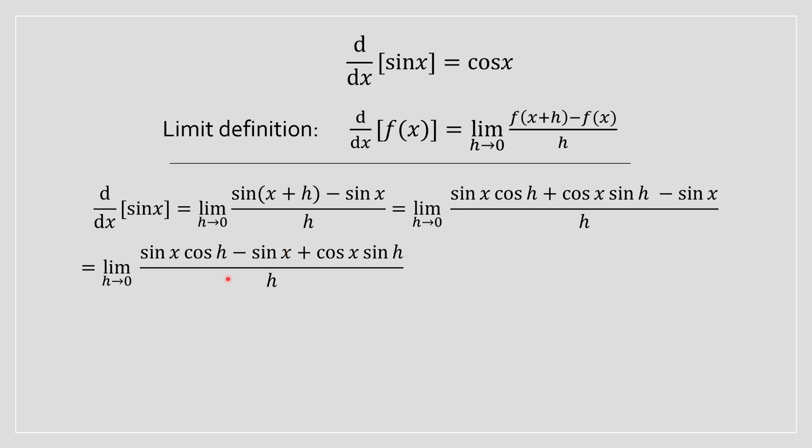You see over here we can factor this out ultimately leading us to sin(x)(cos(h) - 1), so we factor out the sine of x and what we're going to have to do at this point is we're going to basically separate these into two different fractions and you'll see why in a moment.